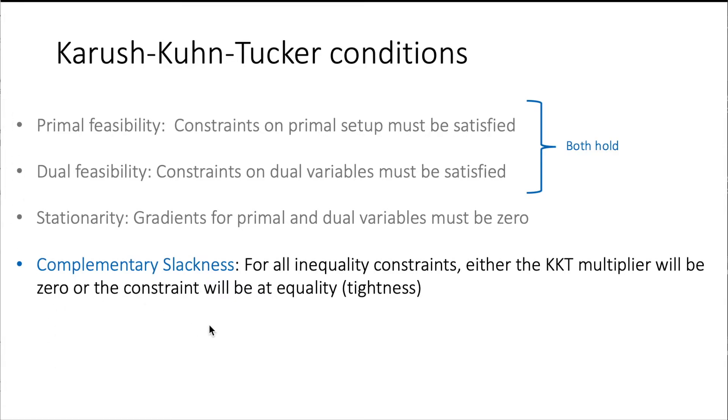And now we are going to see the complementary slackness condition, which says for all inequality constraints, either the KKT multipliers will be zero or the constraint will be at equality, also called tightness. In other words, if the KKT multipliers are not zero, then the constraint must be at equality.